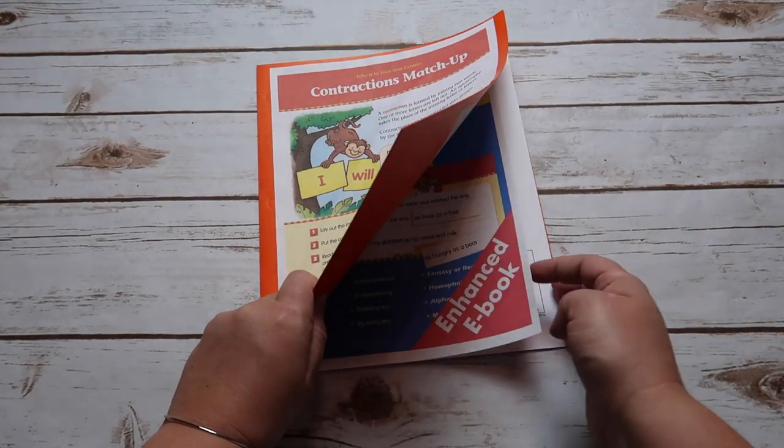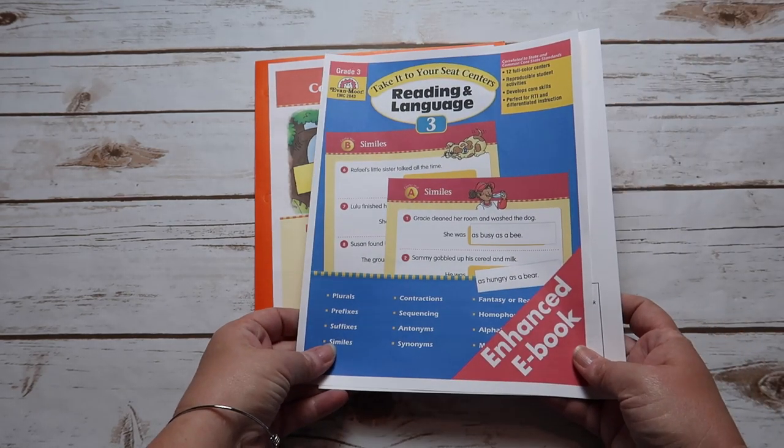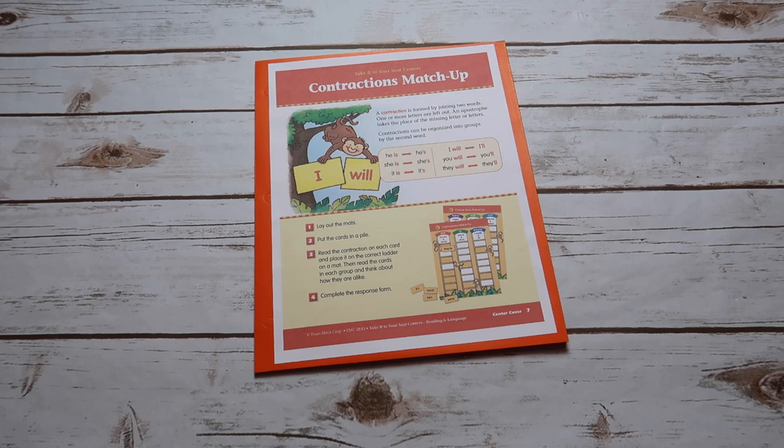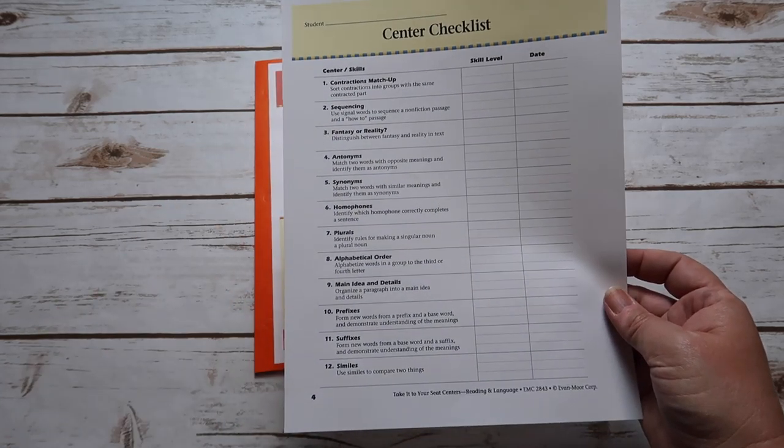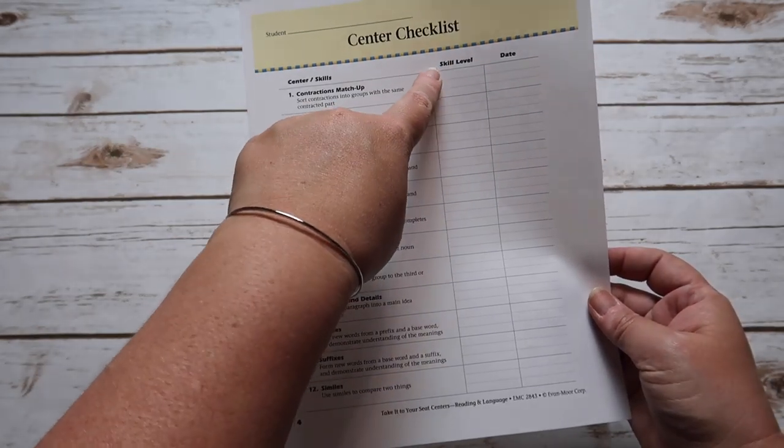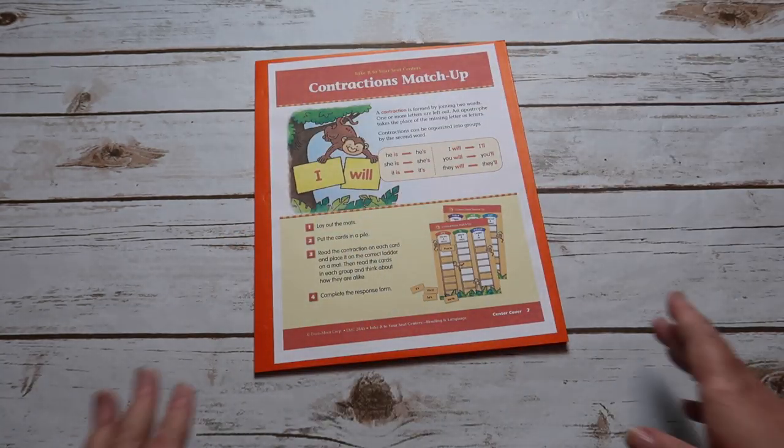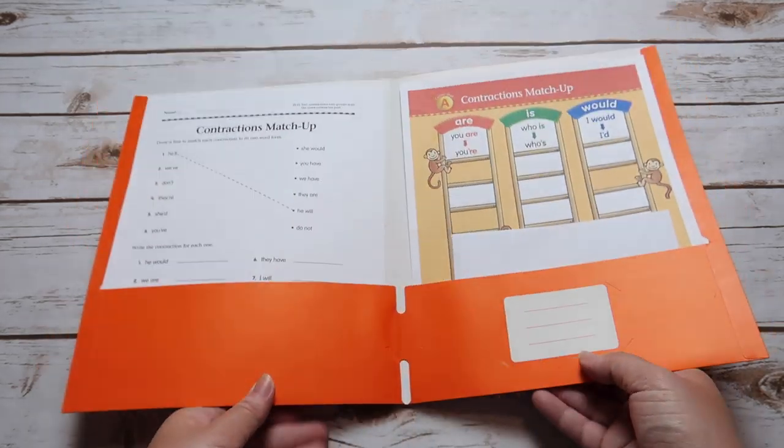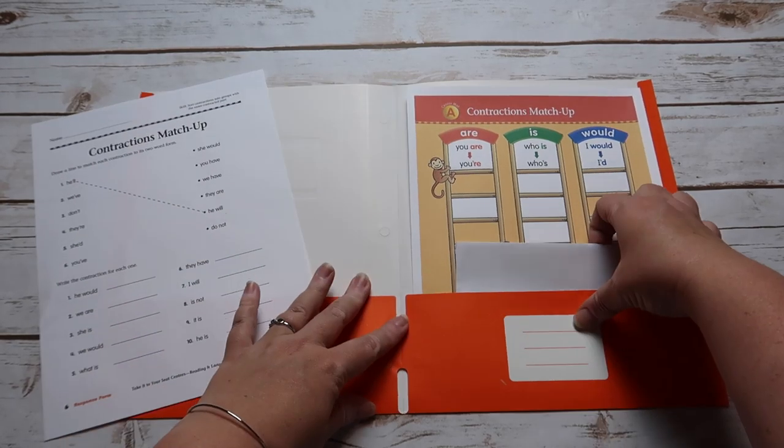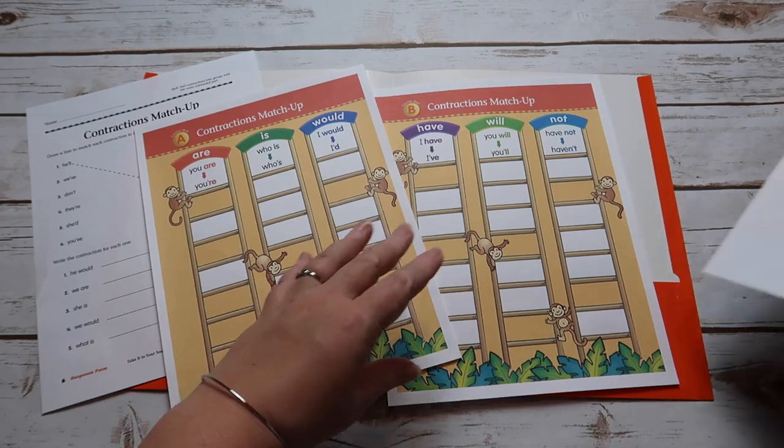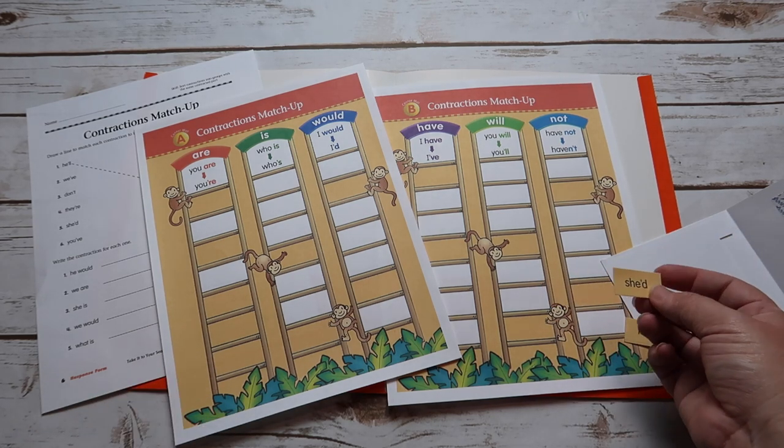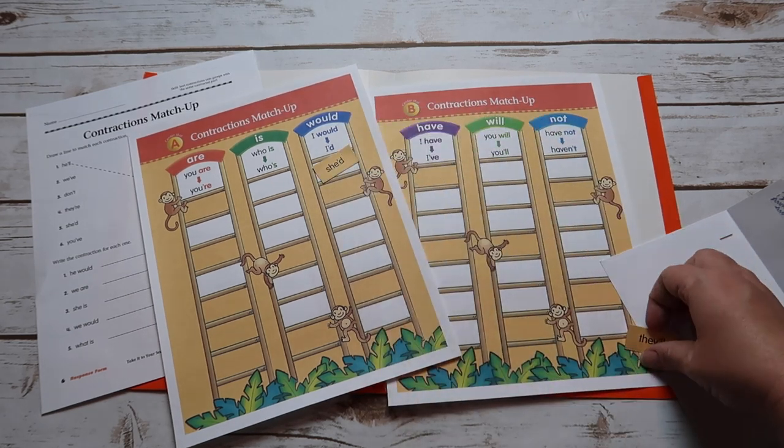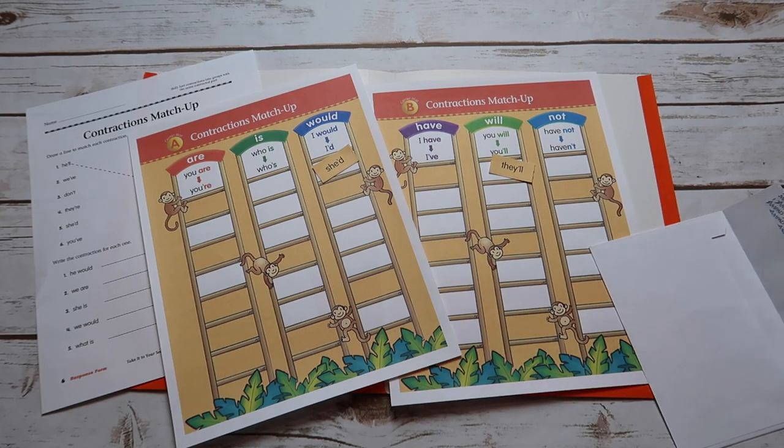Next center that we have is contractions matchup. And that is from the book reading and language. The reading and language, take it to your seat that we'll be looking at today is third grade. It includes 12 different centers. One of the things I forgot to mention is that each book comes with a center checklist. So you can see all of the different centers that are included and you can put like the skill level, like how well they did and the date. So this contraction matchup has their recording sheet on this side, like always. And then this one has a few different mats. So there's a mat one and two. And then in here you have the little things. So like she'd would go under the wood and they'll would go there. So it's just fun sorting for contractions.